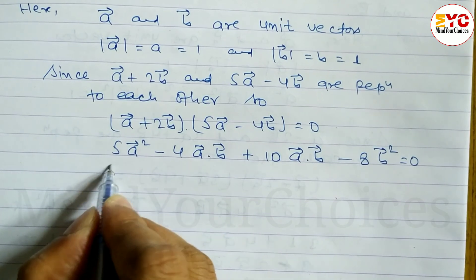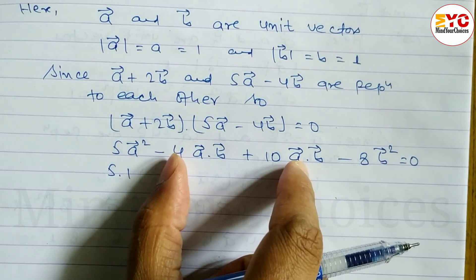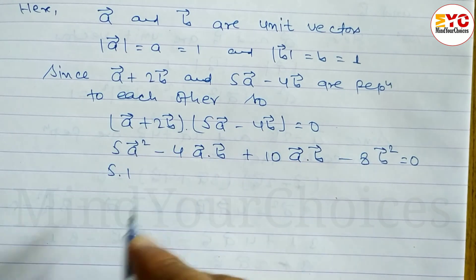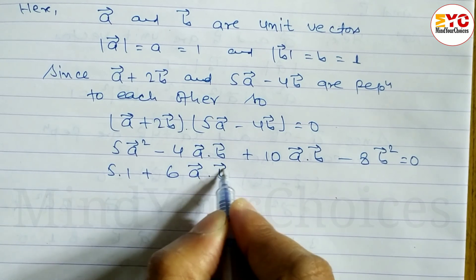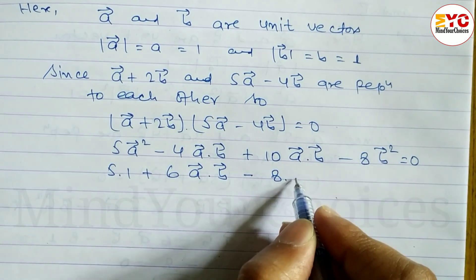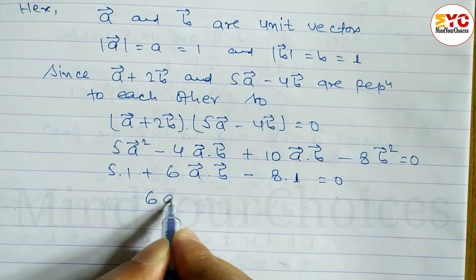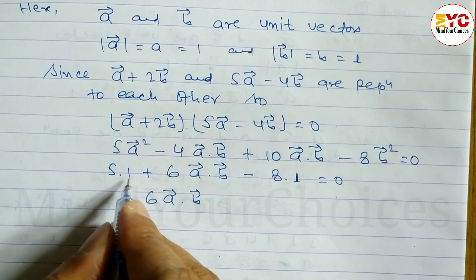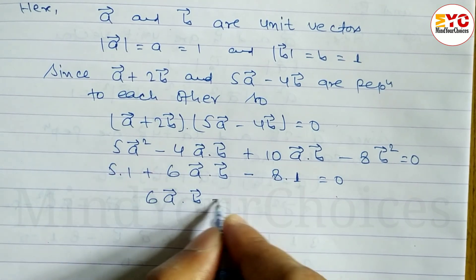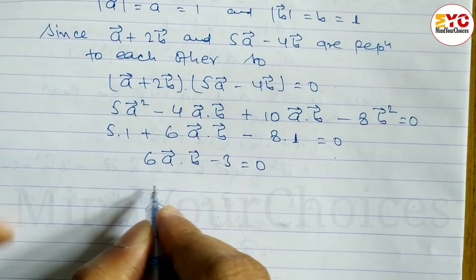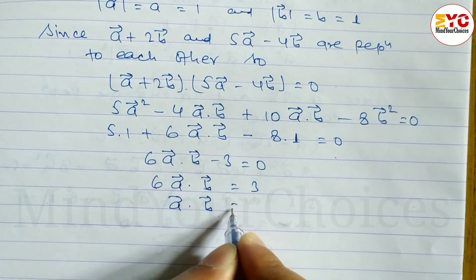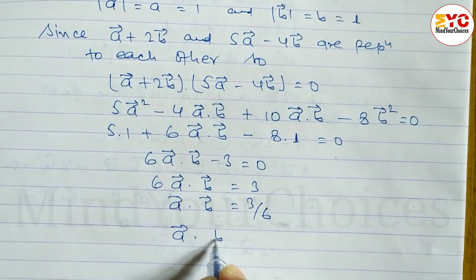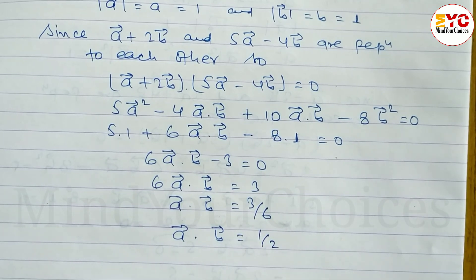Since a and b are unit vectors, a squared equals 1 and b squared equals 1. Substituting: 5(1) - 4(a·b) + 10(a·b) - 8(1) = 0, which gives 5 + 6(a·b) - 8 = 0, so 6(a·b) = 3, therefore a·b equals 1/2.